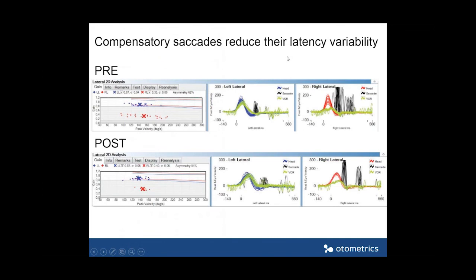This final slide summarizes pre- and post-compensation VHIT data. Pre-compensation shows head impulses to the left where the gain matches well, but rightward rotations show a very weak green slow phase with a large gap between eye and head peak velocities and numerous compensatory saccades — a mixture of overt and covert. As people compensate, there is less variability and saccades roughly divide into two categories: early and later saccades. This gathering or clustering is probably a marker of compensation.